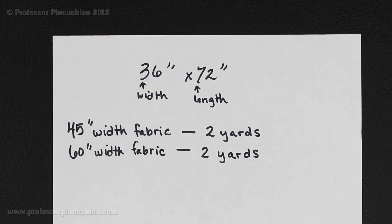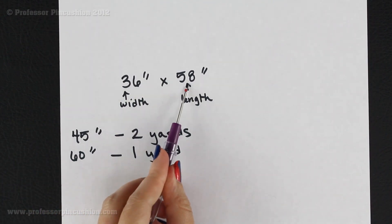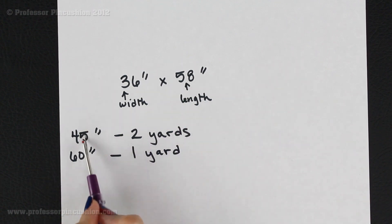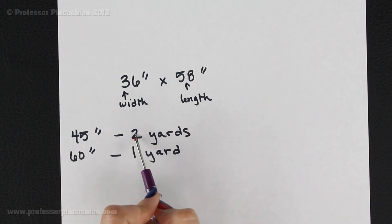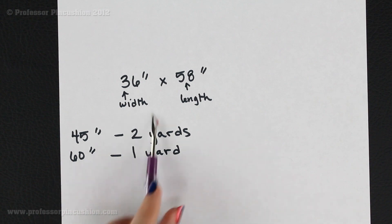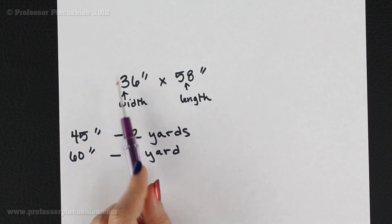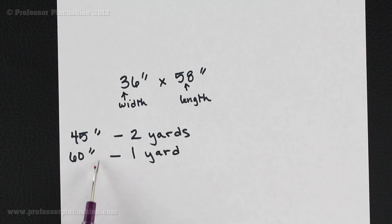There may be an advantage if your length is a little less than 60 inches. Let's say it's 36 by 58 — I would still have to get 2 yards of the 45-inch fabric because 58 doesn't fit into 45. But with 60-inch wide fabric, 58 inches fits into 60. So I can use that as the width of my fabric and only purchase 36 inches — one yard. This is where using wider-width fabric gives you an advantage.